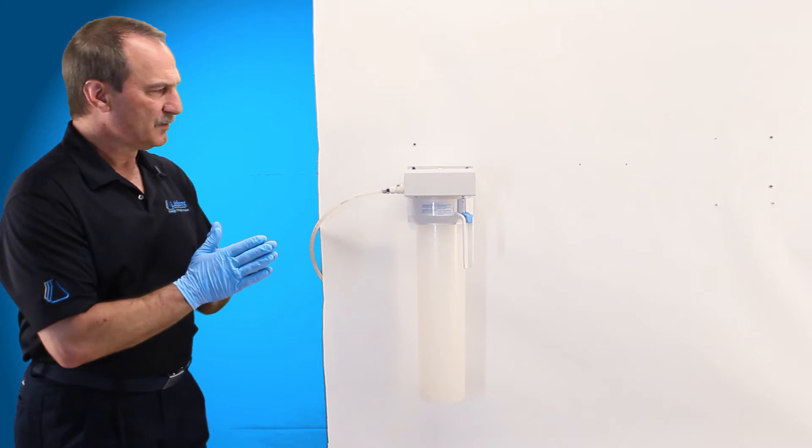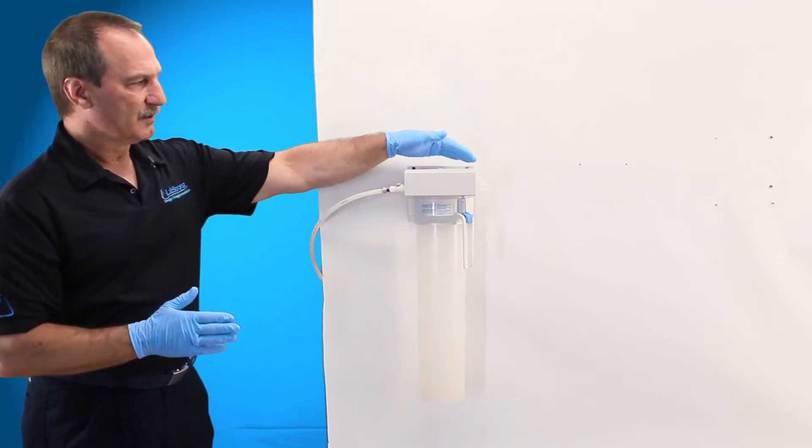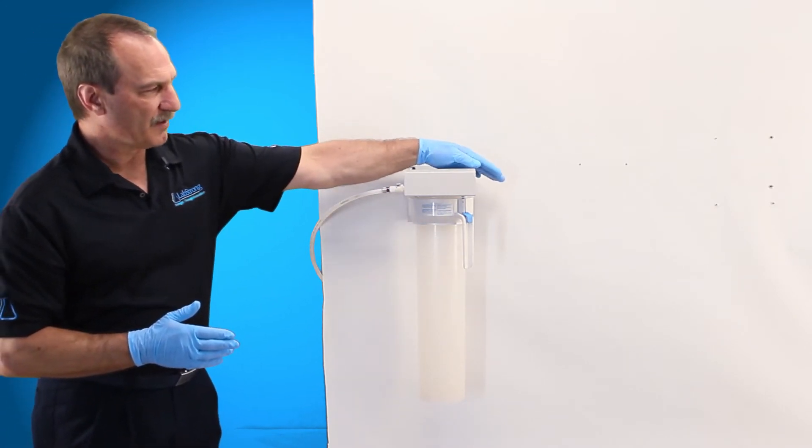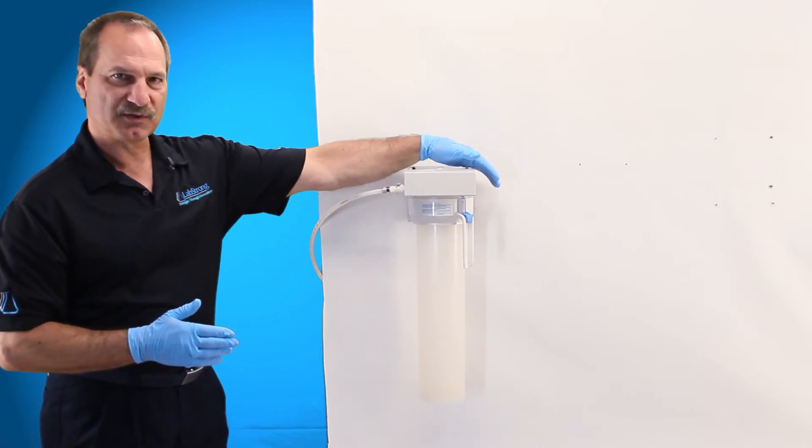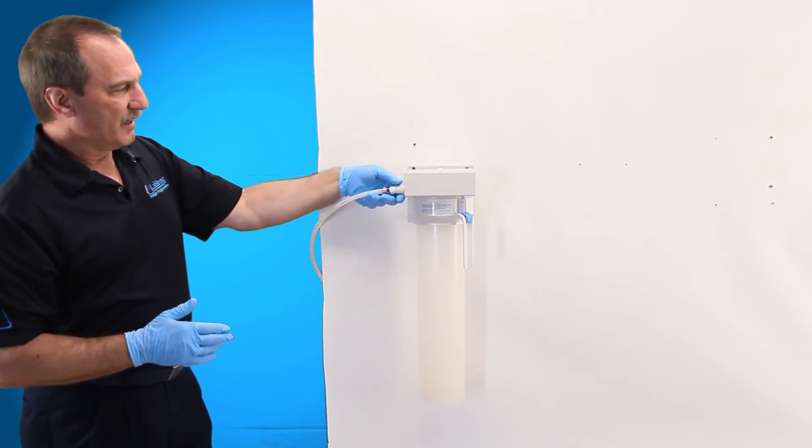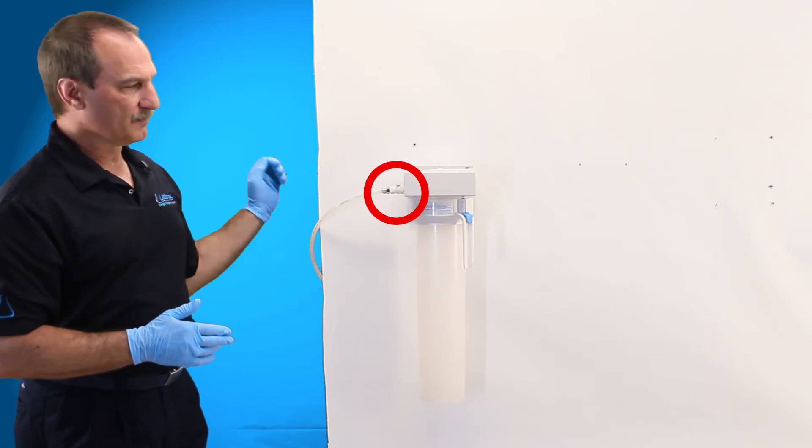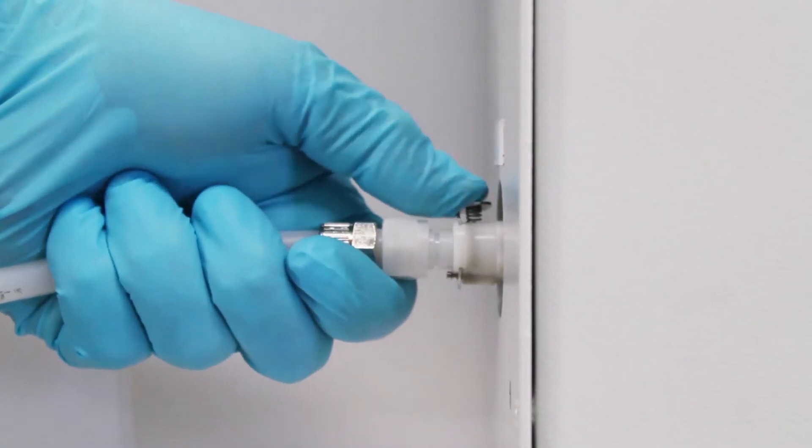First thing you want to do is depressurize the unit by disconnecting. Open up your valve at the end, whatever this is connected to, you want to make sure this is open, and then shut your water source off. Disconnect your water source.